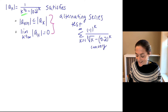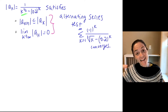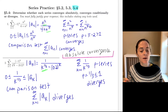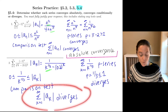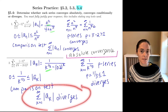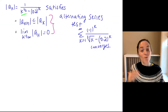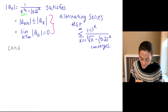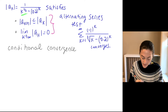Now we have to make our conclusion. We were asked: converges absolutely, converges conditionally, or diverges? The series of absolute values diverges, while the series itself converges. And so we have conditional convergence. This is our conclusion for number two.